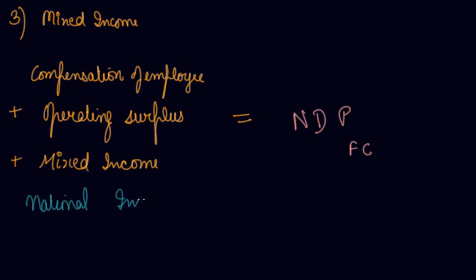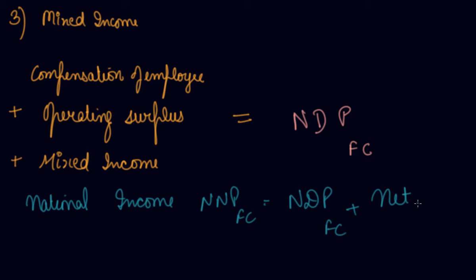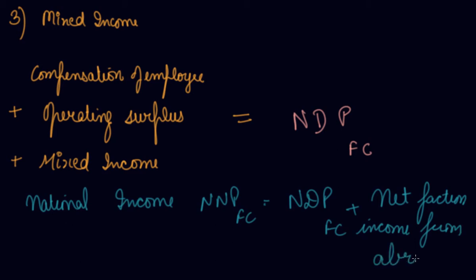Your national income is NNP at FC. To get it from NDP at FC, you add net factor income from abroad, and you get your NNP at FC. In this way you can find out the national income using the income method.